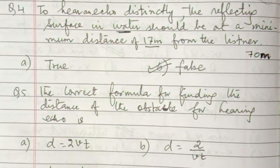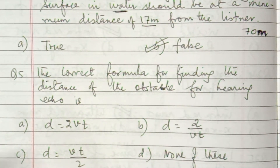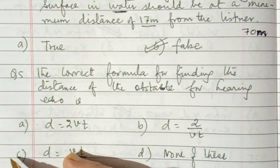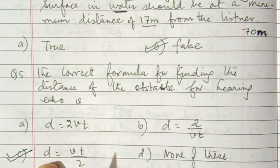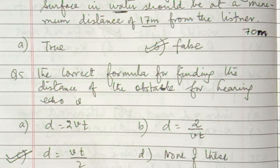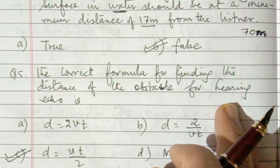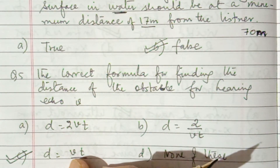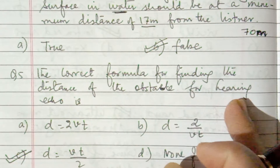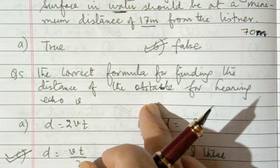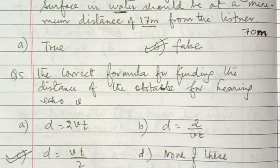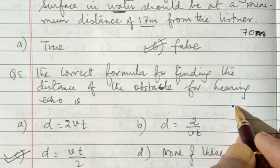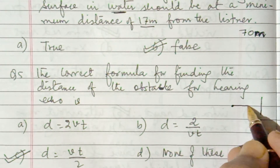Question number 5: the correct formula for finding the distance of the obstacle from the listener for hearing an echo. Options are: d = 2v × t, d = 2/(vt), d = vt/2, or none of these. The answer is d = vt/2. The basic formula is distance = speed × time, but sound travels the distance d twice — it goes to the obstacle and comes back. So 2d = vt, therefore d = vt/2. Remember, this formula is applicable only when the source of sound and the listener are at the same point.